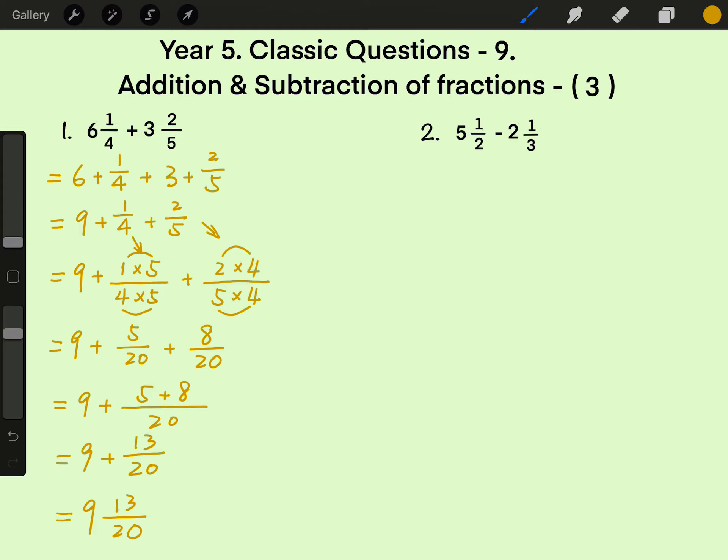What would be the answer in improper fraction? Denominator is the same. So whole number 9 times 20 divided by 20, and then plus 13 over 20.